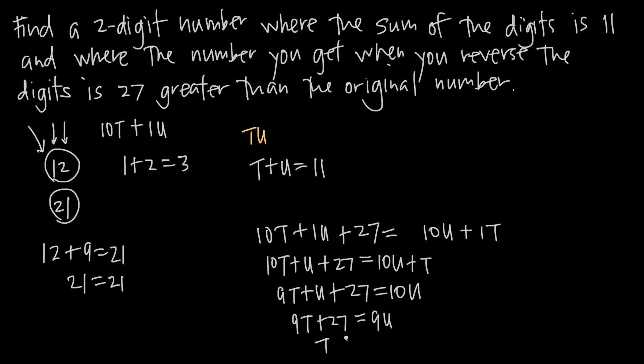9t over 9 gives us t, 27 over 9 gives us 3, and 9u divided by 9 just gives us u.